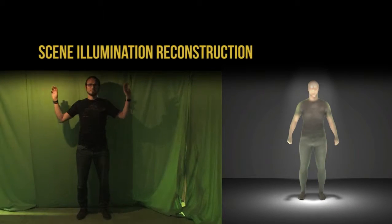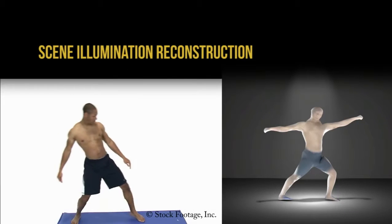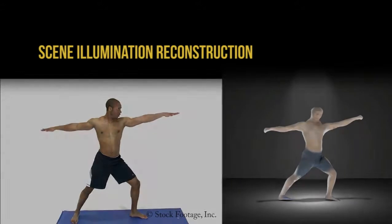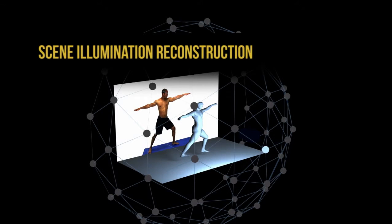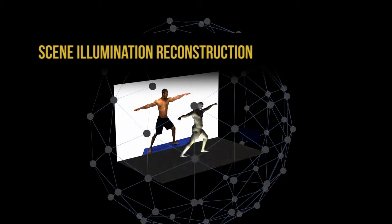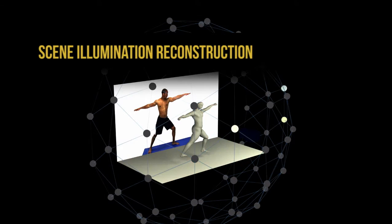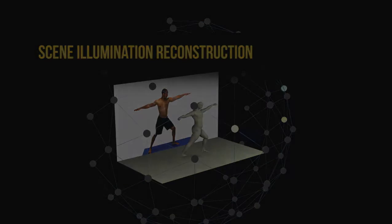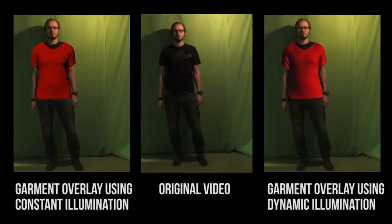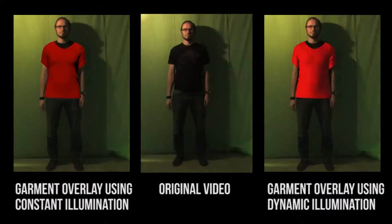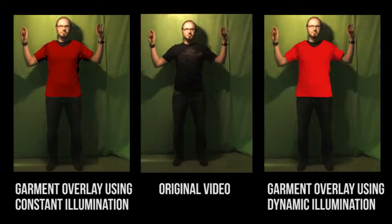We estimate the scene lighting by first reconstructing the diffused BRDF of the original clothing. We then distribute virtual point lights uniformly around the actor using a golden spiral distribution, and pose the color and intensity adjustment as a linear system that can be optimized to match the appearance in the original image. As we reconstruct the lighting separately for each frame, we can also handle dynamic lighting situations.